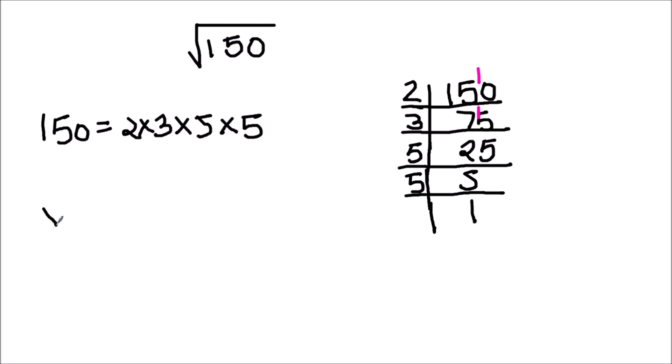Now for finding the square root of 150, we are going to take the square root on both the sides. Square root of 150 will be square root of 2 times 3 times 5 times 5.